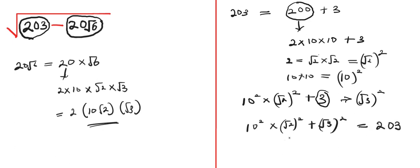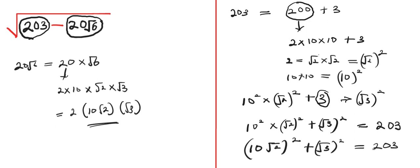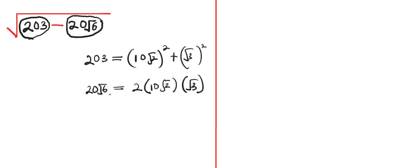So if we rewrite all this, we are going to have 10 root of 2 times root of 2 squared. We can combine this as 10 root of 2 all squared plus root of 3 squared, which equals 203. So this will now replace 203, and 20 root of 6 will now be replaced with 2 times 10 root of 2 times root of 3.